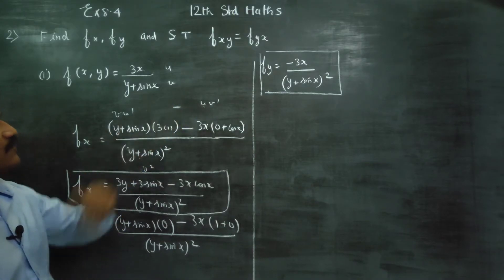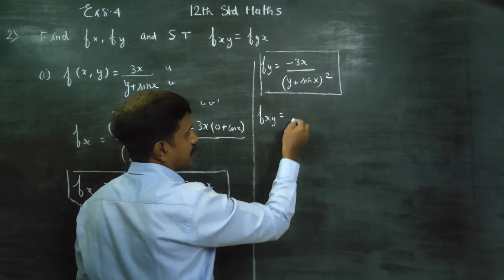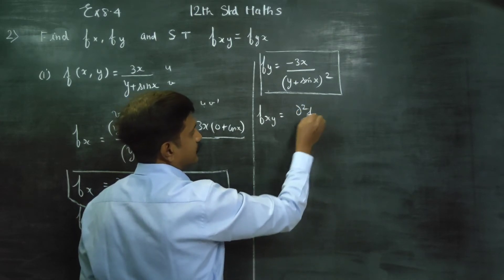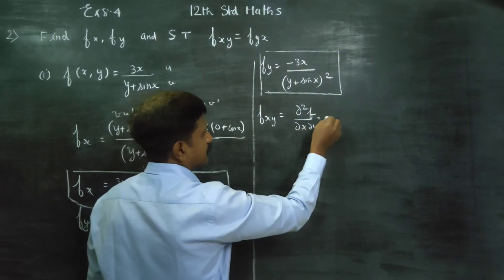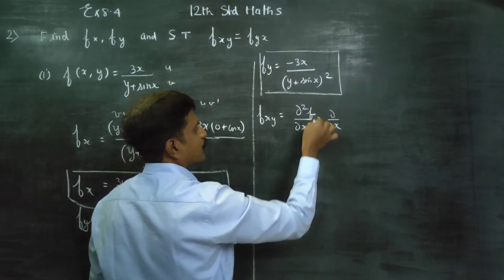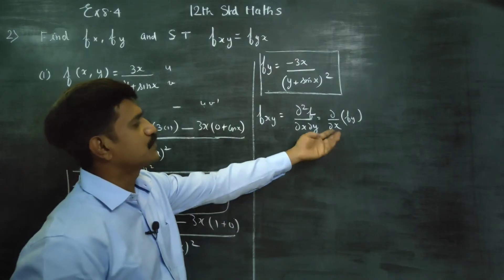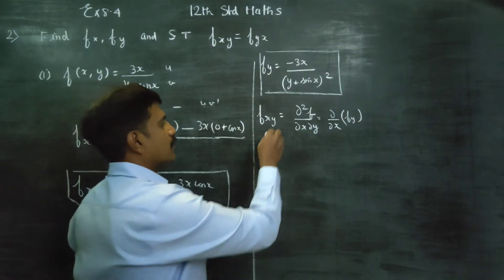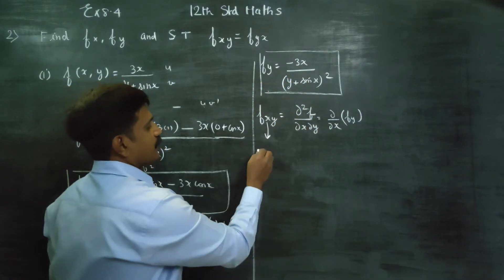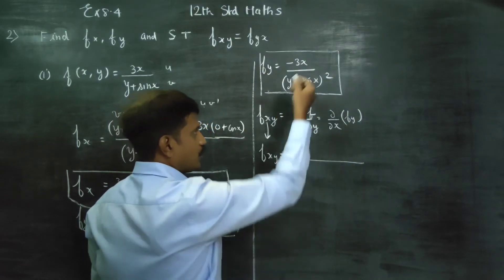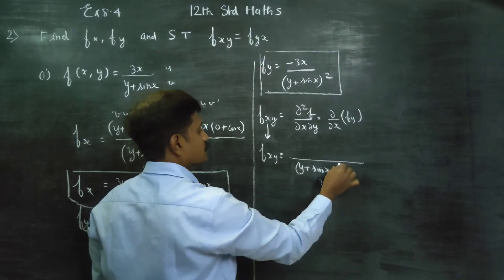After completing fx and fy, we compute fxy. The meaning of fxy is dou squared f by dou x dou y — that is, do by do y of fx. We take our fy result and differentiate it with respect to x. Applying the u/v formula again, v squared becomes (y plus sin x) squared, and the overall denominator will become (y plus sin x) to the power 4.